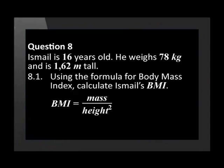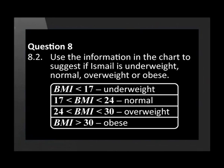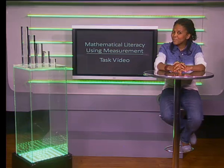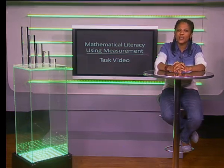Question eight asks us to calculate a body mass index and comment on the value. Ishmael is 16 years old, weighs 78 kilograms, and is 1.62 meters tall. Using the formula BMI equals mass divided by height squared, calculate Ishmael's BMI. Use the information in the chart to suggest if Ishmael is underweight, normal, overweight, or obese.